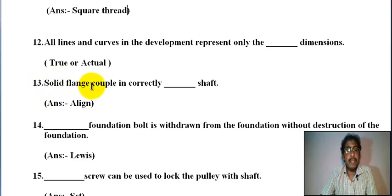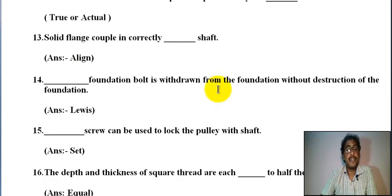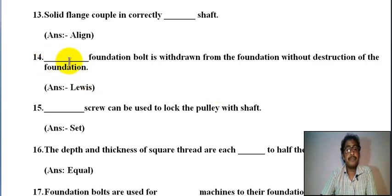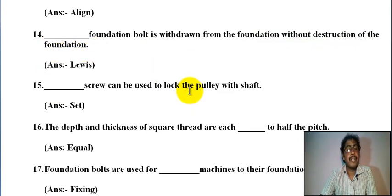Number thirteen: solid flange couple is correctly aligned shaft. Number fourteen: foundation bolt is withdrawn from the foundation without destruction of the foundation. Lewis foundation bolt, L-E-W-I-S, Lewis foundation bolt is withdrawn from the foundation without destruction of the foundation.